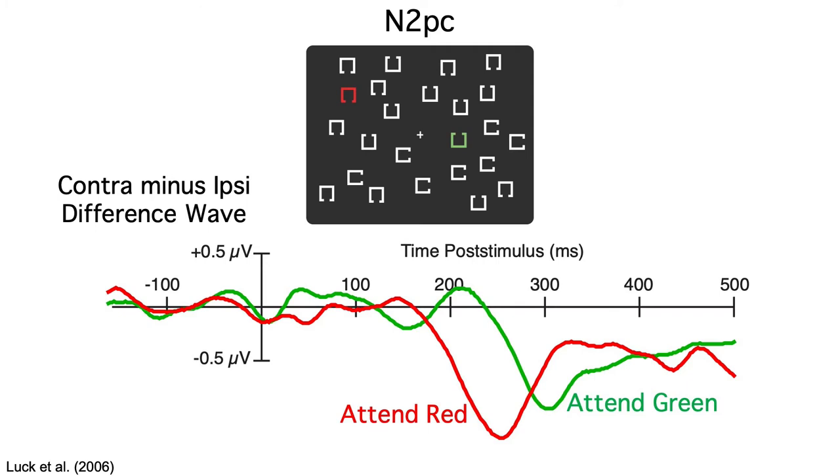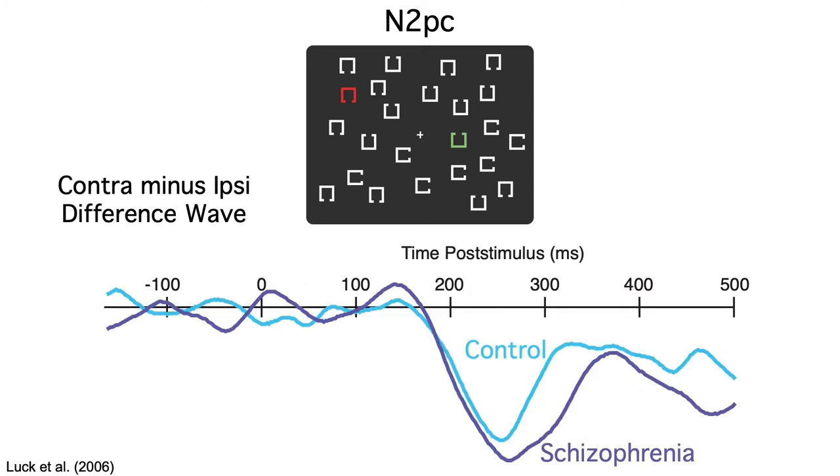These are actually the data from a group of control subjects in a schizophrenia study. Our main goal was to see if the N2PC is delayed in people with schizophrenia.